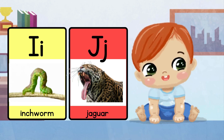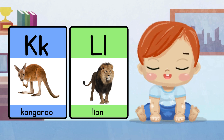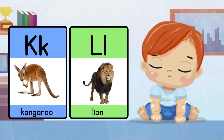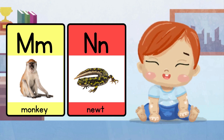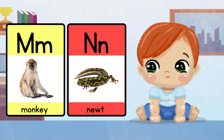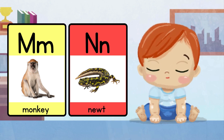J for jaguar. K for kangaroo. L for lion. M for monkey. N for newt.